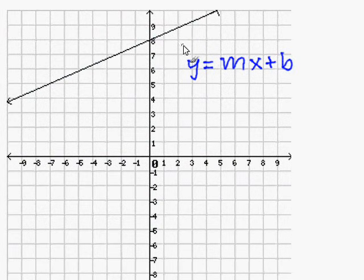Write an equation in slope-intercept form given a graph. Before we write our equation, we must know what the slope-intercept form is, and it is y equals mx plus b.